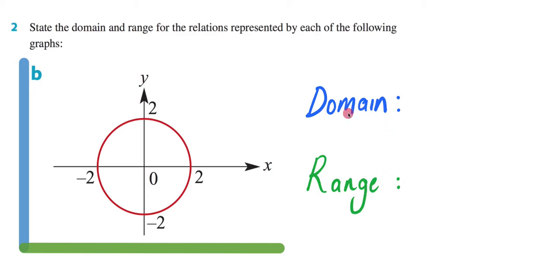We know that my domain is going to be my set of all possible x values. So you could immediately look at this and say alright my x values are going to be from negative 2 all the way to 2. So I could grab my pen and come here and write negative 2 to 2.